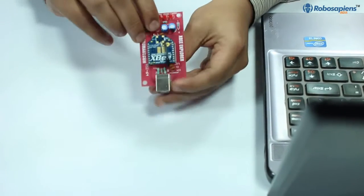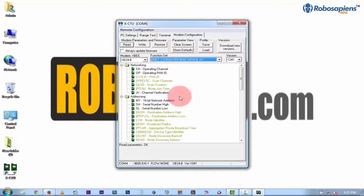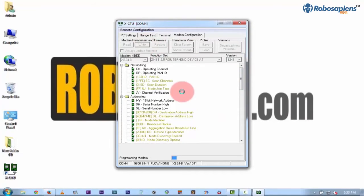Now connect the second Zigbee module with Zigbee Explorer and configure it for the end device. Now write the high destination address and low destination address, then write the configuration.